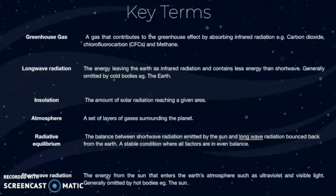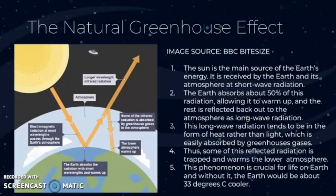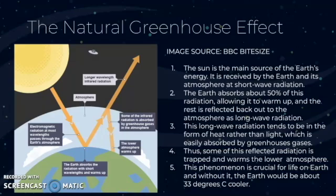These terms are very important when we consider the natural greenhouse effect. The natural greenhouse effect is basically the warming of the Earth that happens without any human interference — it's a natural process because our Earth needs this warming effect to survive and have living things on it. First of all, the sun is the main source of the Earth's energy. It is received by the Earth and its atmosphere as shortwave radiation, which comes from hot bodies such as the sun.